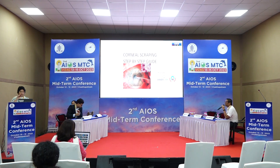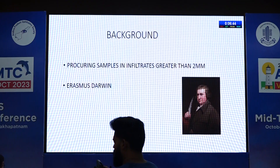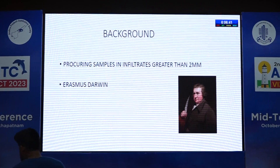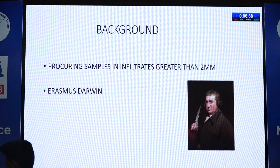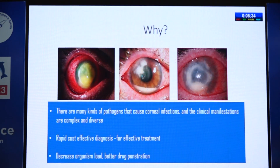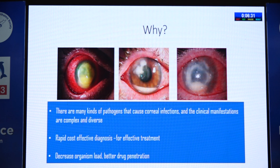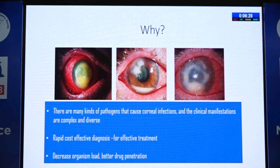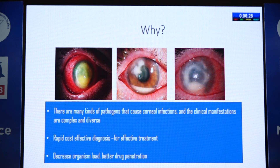Good evening. Dr. Divya from Vision Eye Hospital. My presentation covers: the background — why we need to do a scraping; preparation before the procedure; the procedure itself; and points to remember. Procuring samples from an infiltrate greater than 2 mm is called corneal scraping. Erasmus Darwin was the first person to suggest the idea of therapeutic debridement to make the cornea clear.